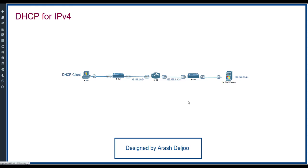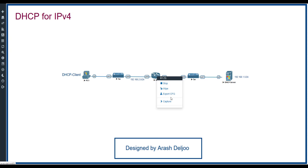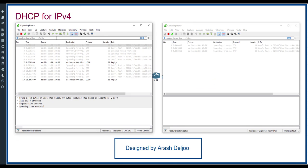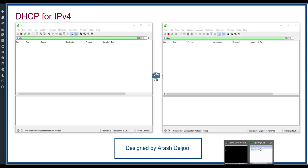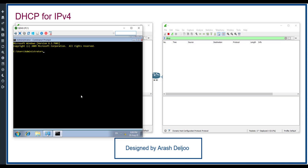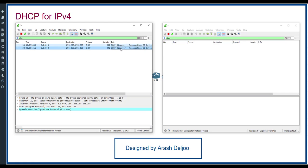I'm going to capture both eth0 and eth1 to compare them. This is the capture of eth0 and this is eth1. On PC1, I'll run 'ipconfig /release' and then 'ipconfig /renew'. As you can see, the DHCP Discovery is sent, but because it cannot reach the DHCP server, we don't get an IP address.